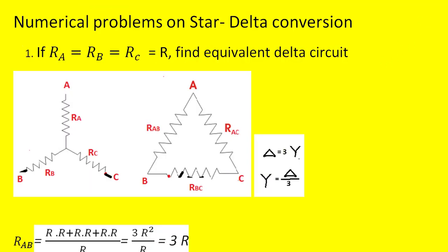Let me summarize what we have solved. We observed that if the resistors in the star or delta are different, we must use the formulas to get the equivalent delta or star. If the resistors are equal in all branches, we use the standard formulas: Delta equals three times Star, and Star equals one-third of Delta. These are the key concepts discussed for simplifying star-delta conversion circuits.